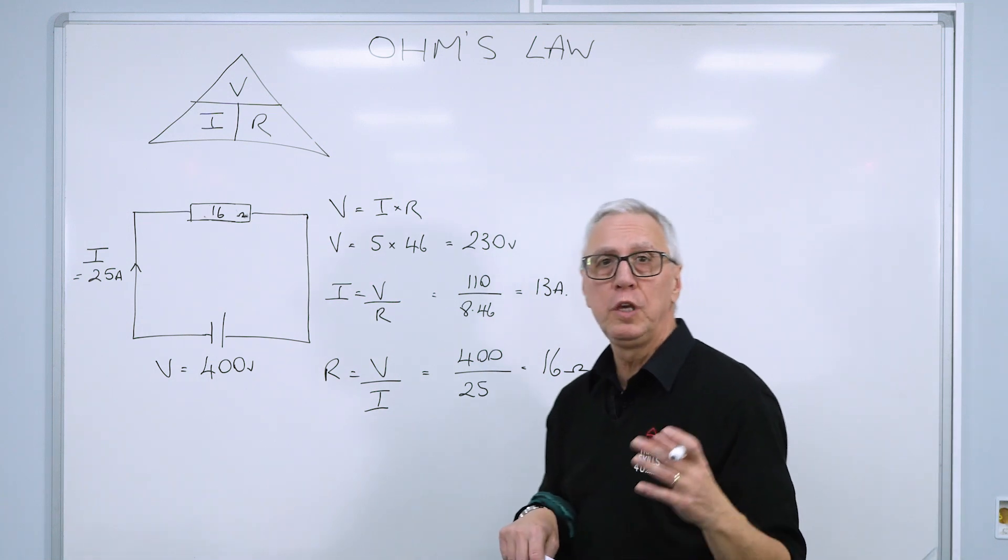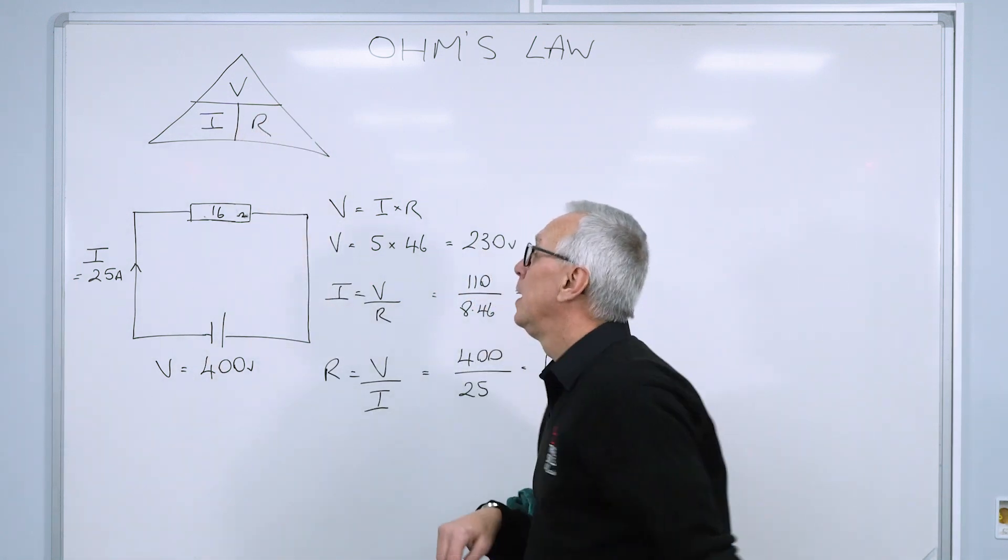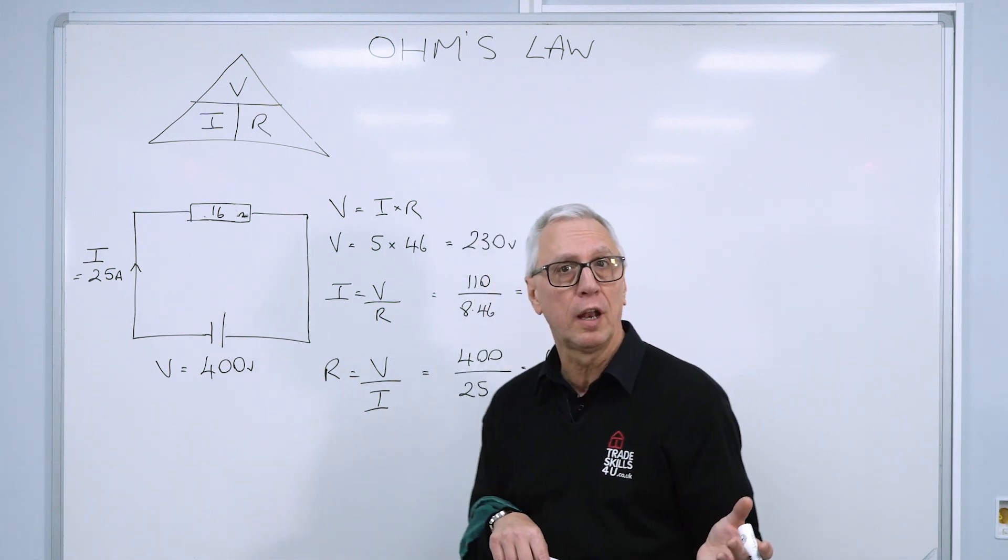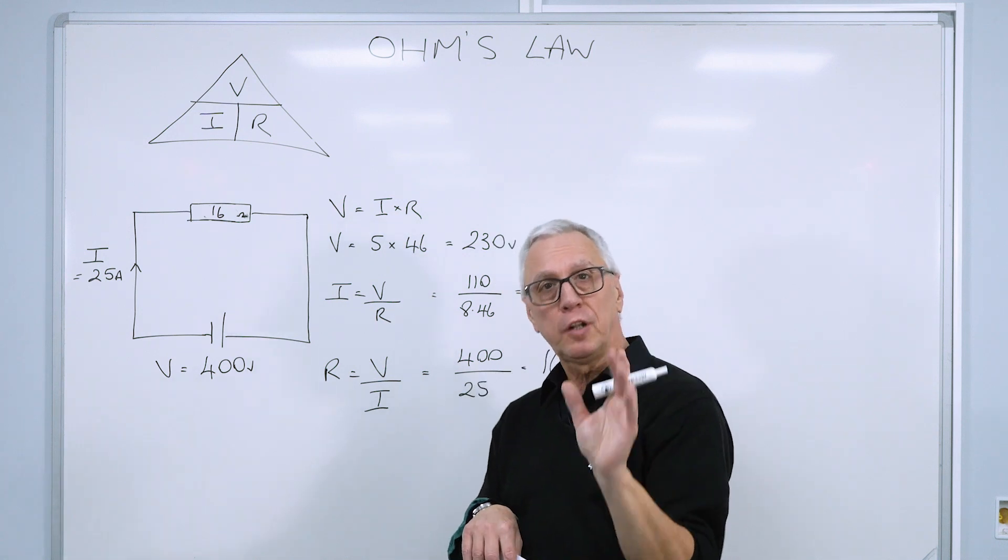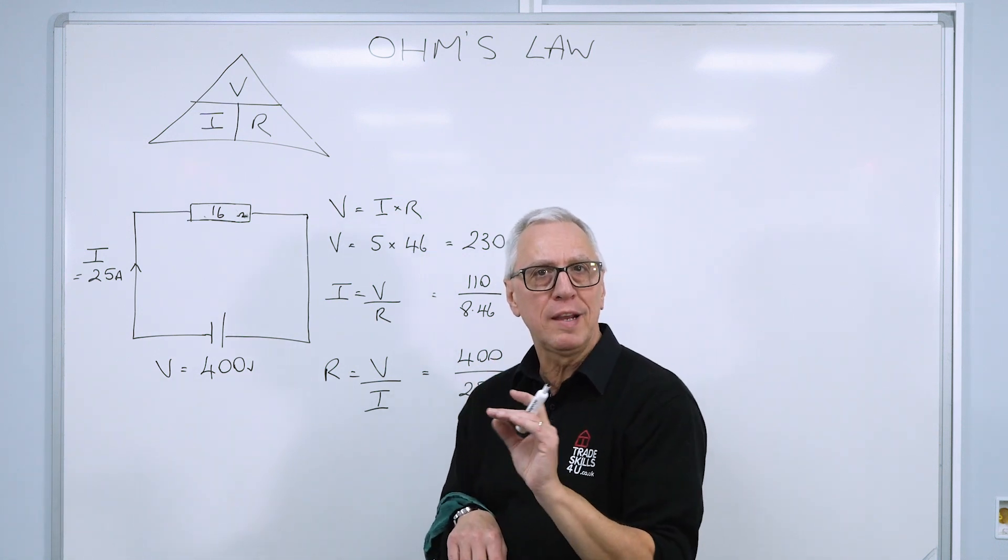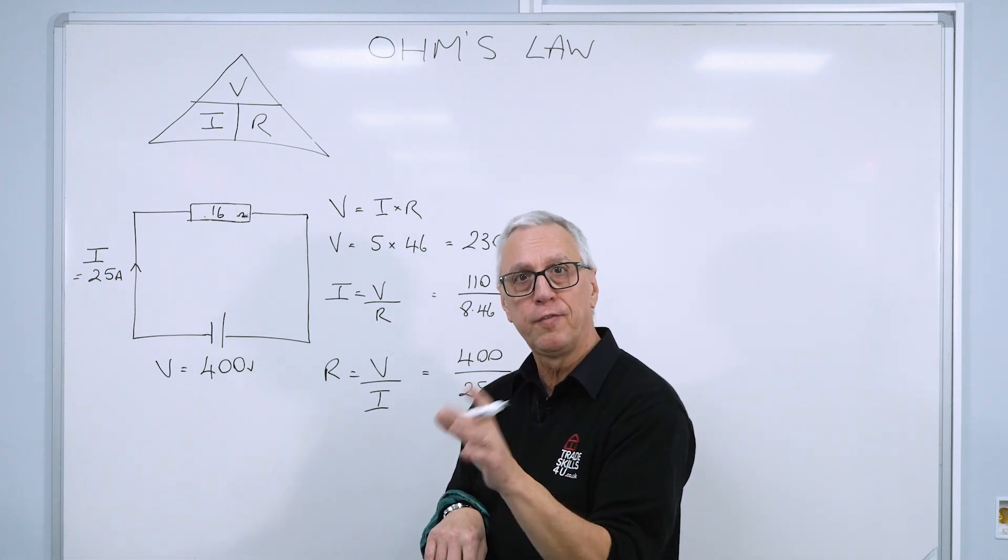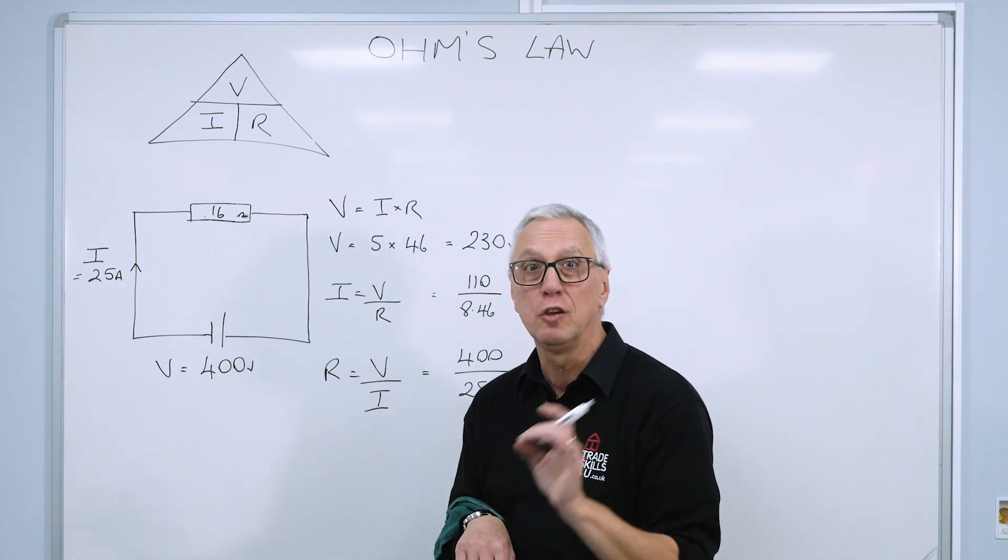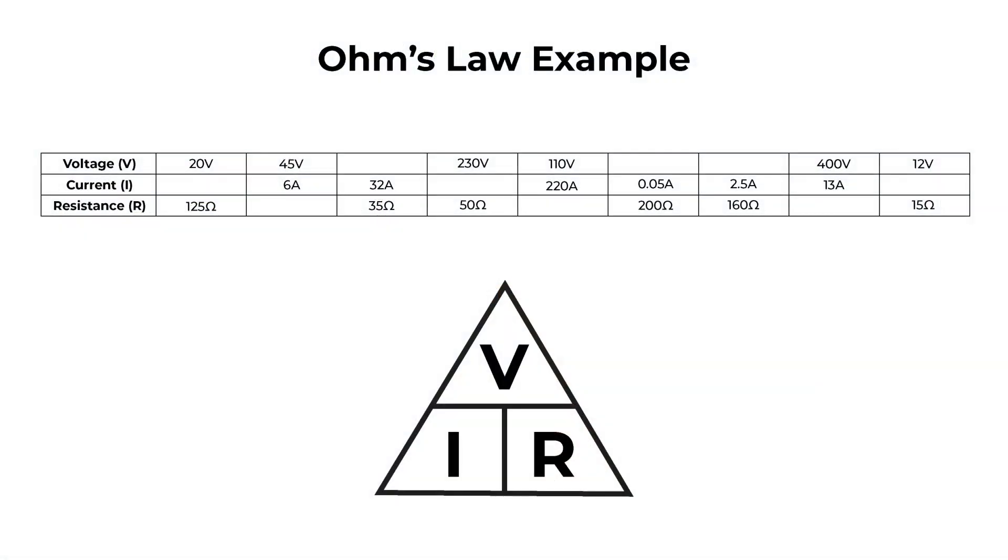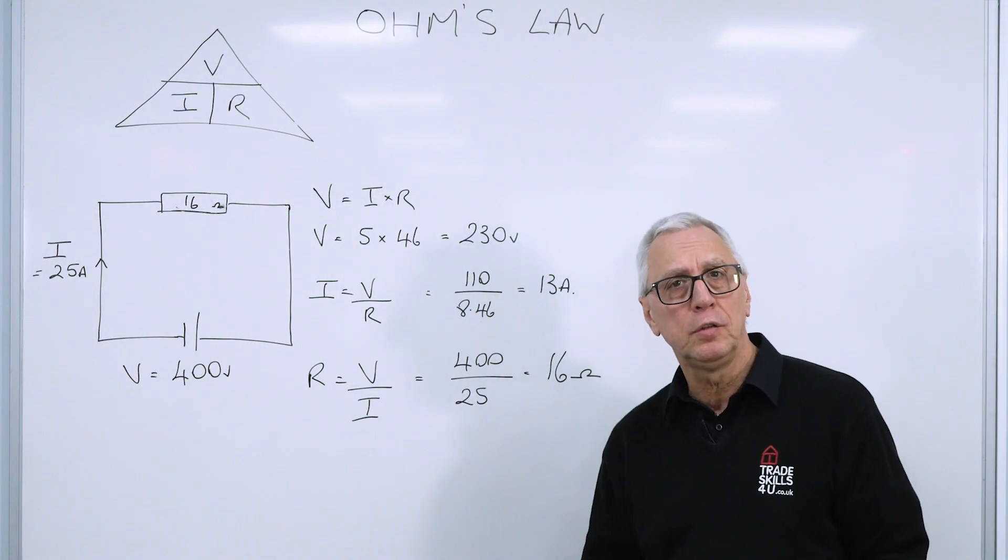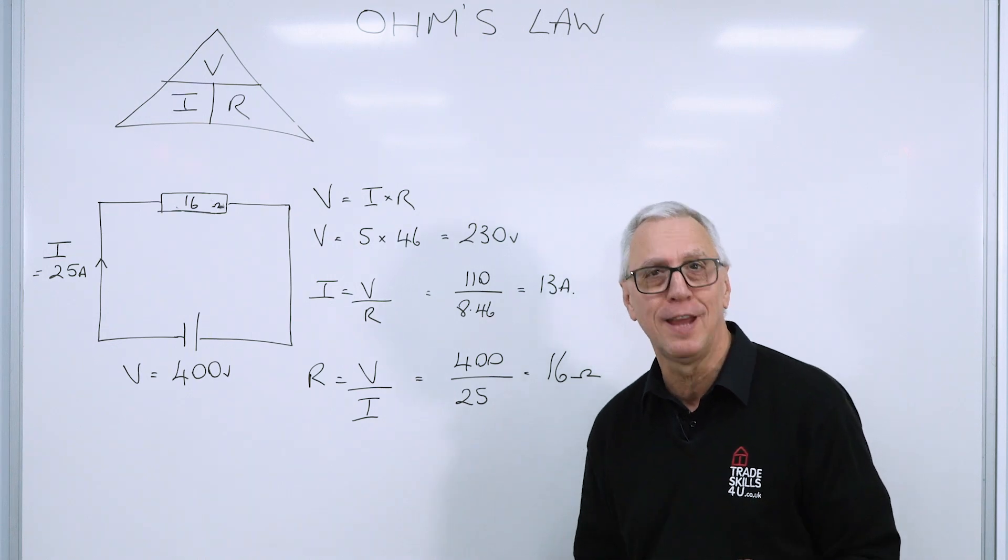And that's how we use the Ohm's Law triangle. And anybody studying for their 2365 City and Guilds will have to do these calculations at some point. So there's a slide coming up now with a few blanks for you to fill in. Just pause the video when the slide comes up. And then a few seconds later, the answers will come up. And you can just check your answers. So I hope you found this video helpful. If you have, please like and subscribe. And we'll see you next time.